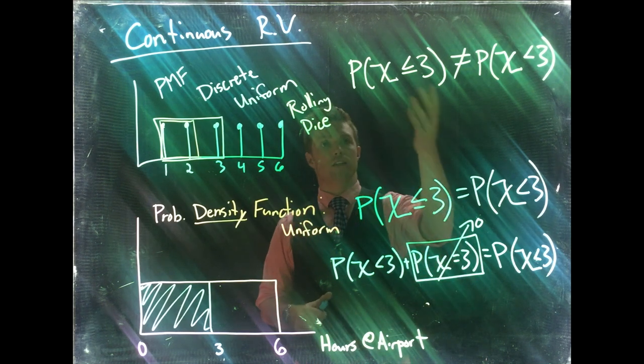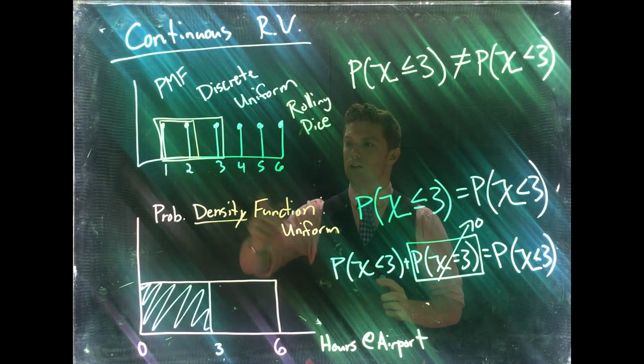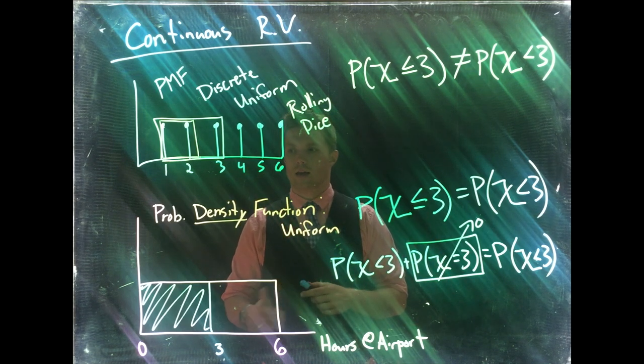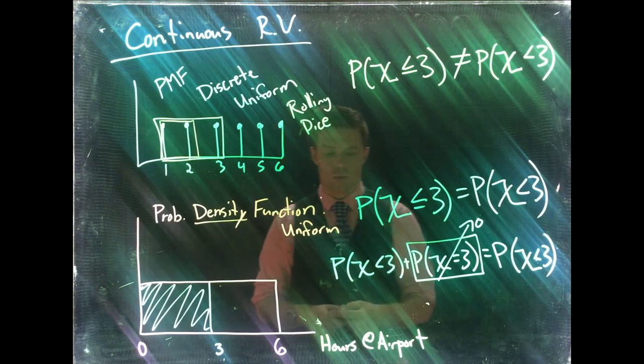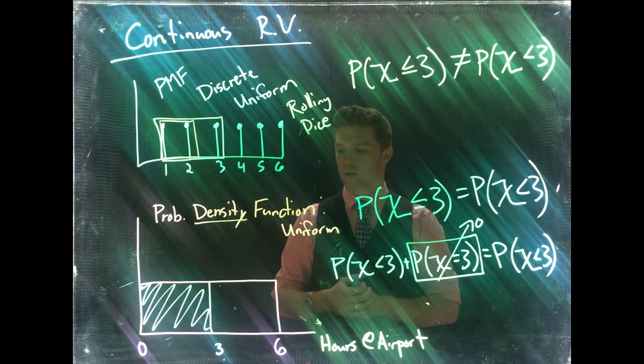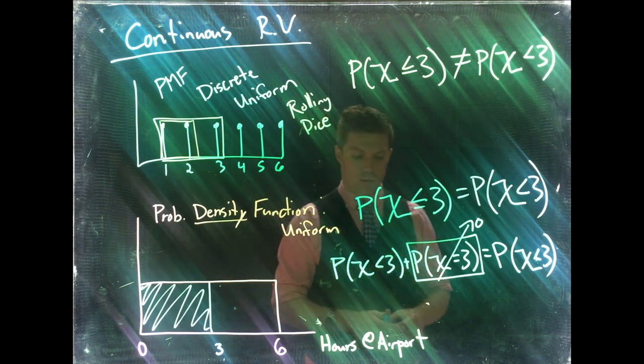Which is a drastic contrast for the discrete random variables. Here if I say, what's the probability of rolling a three? We'd say on a standard dice, it's one out of six. Down here, what's the probability of waiting exactly three hours at the airport? I would say the probability is zero.